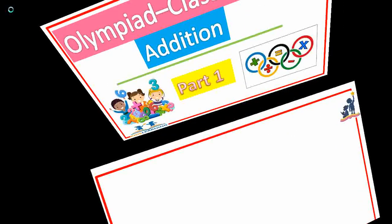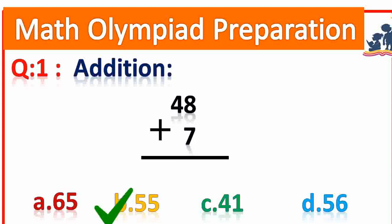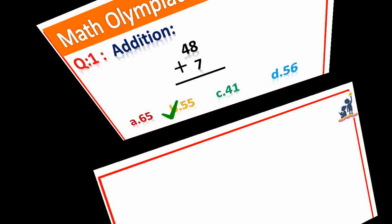Question number 1. Addition: 48 plus 7 is equal to how much? 55. Right.